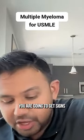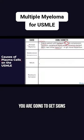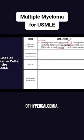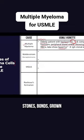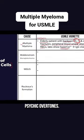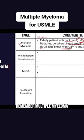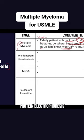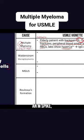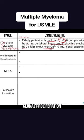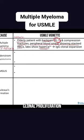And then you are going to get signs of hypercalcemia — stones, bones, groans, psychic overtones. Remember multiple myeloma on your serum protein electrophoresis is going to show an M spike, and that M spike represents a clonal proliferation.